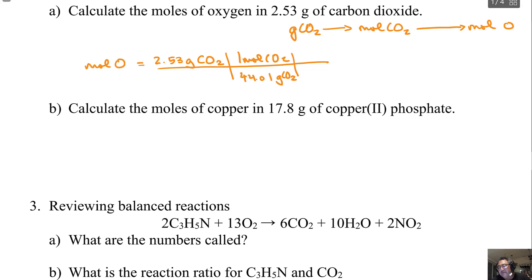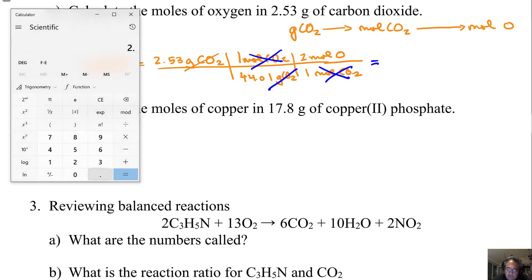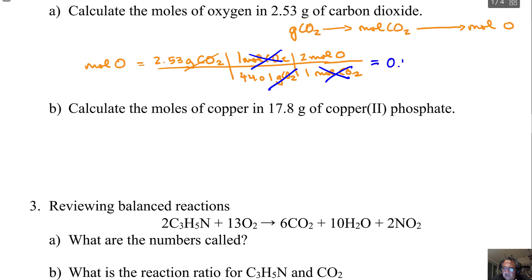That 44 was given to you earlier. Then I write two moles of oxygen for every one mole of CO₂, so the grams of CO₂ will cancel, and the moles of CO₂ will cancel, leaving me with moles of oxygen. If I bring up the calculator, it's 2.53 divided by 44.01 times 2, which gives me 0.11497 moles of oxygen. I have three sig figs given, so I'll round this to 0.115 moles of oxygen.